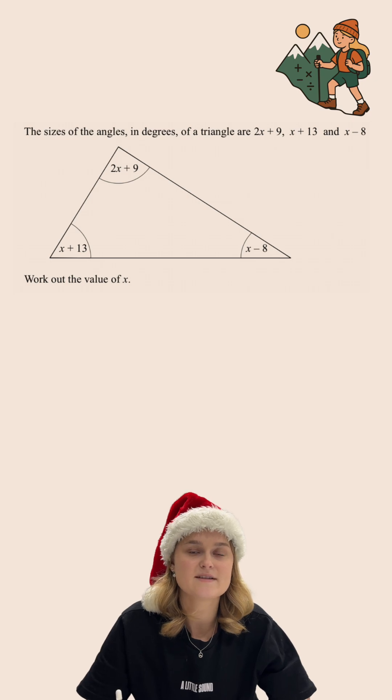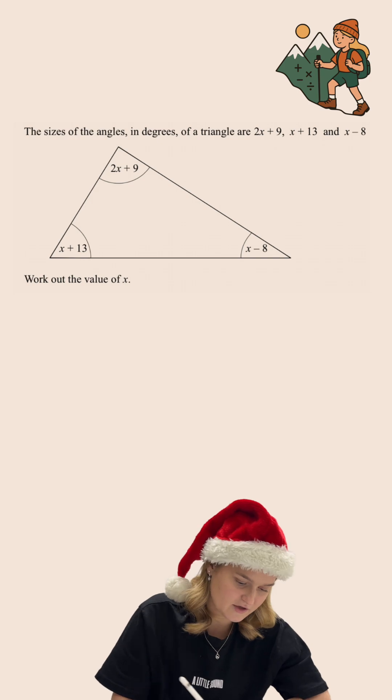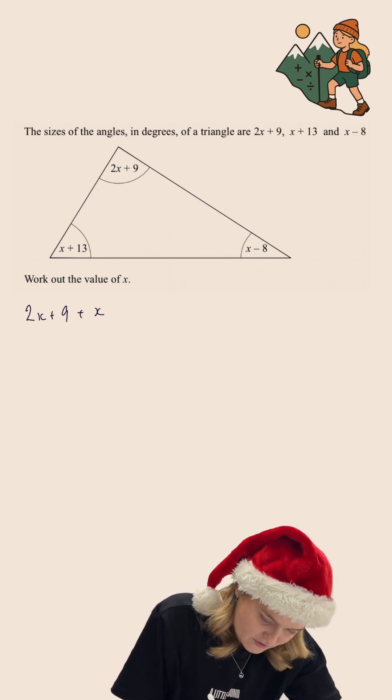Now we know that the angles inside any triangle always sum to 180 degrees. So the first thing that I'm going to do is add together the angles that we've been given and equate it to 180 degrees.